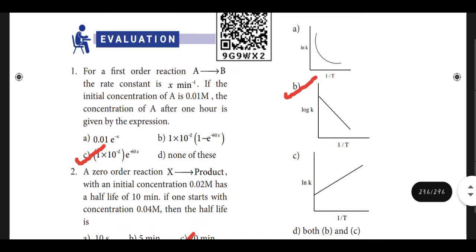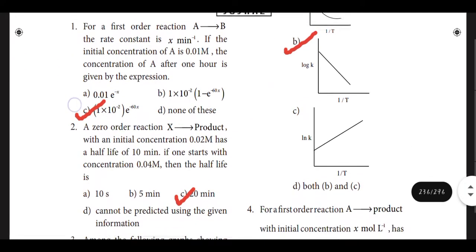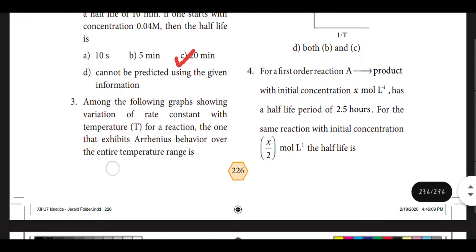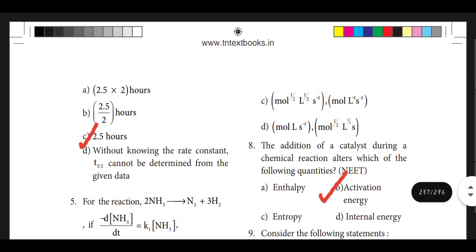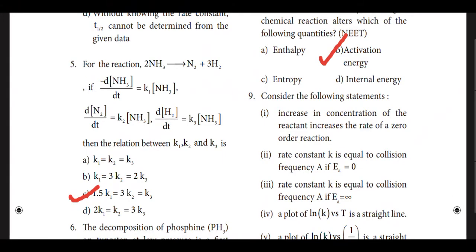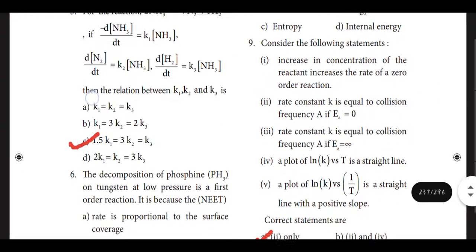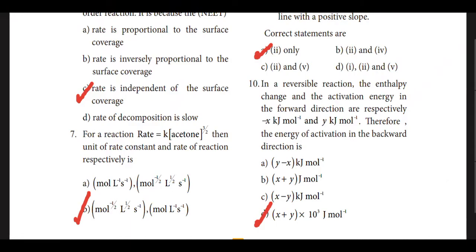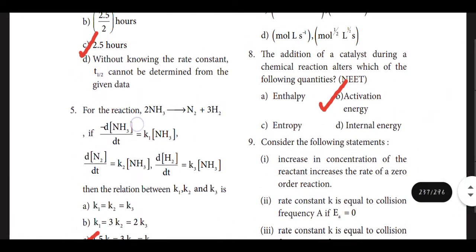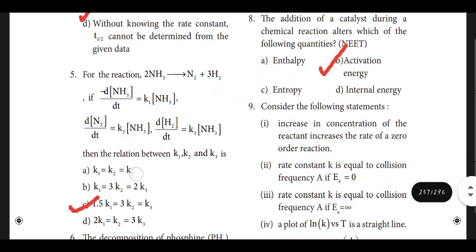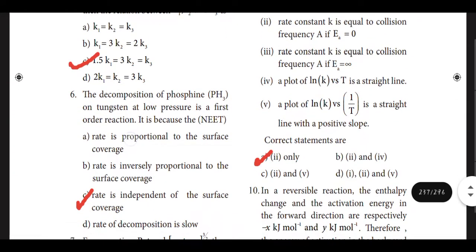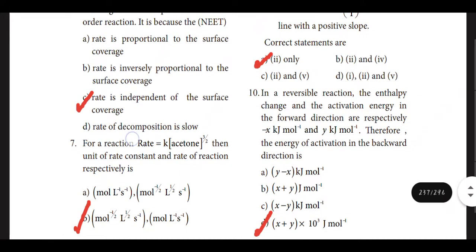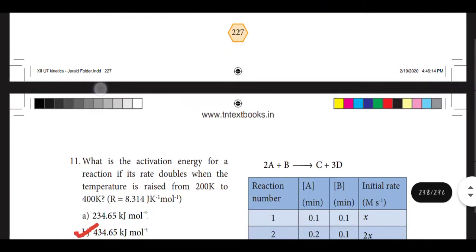First MCQ answer is option C, second one option C, third one B, fourth one option C, fifth one option C. Sixth one option C, seventh one option B, eighth one option B for activation energy, ninth one option A, tenth one option D: x plus y into 2.303 joule mole inverse.